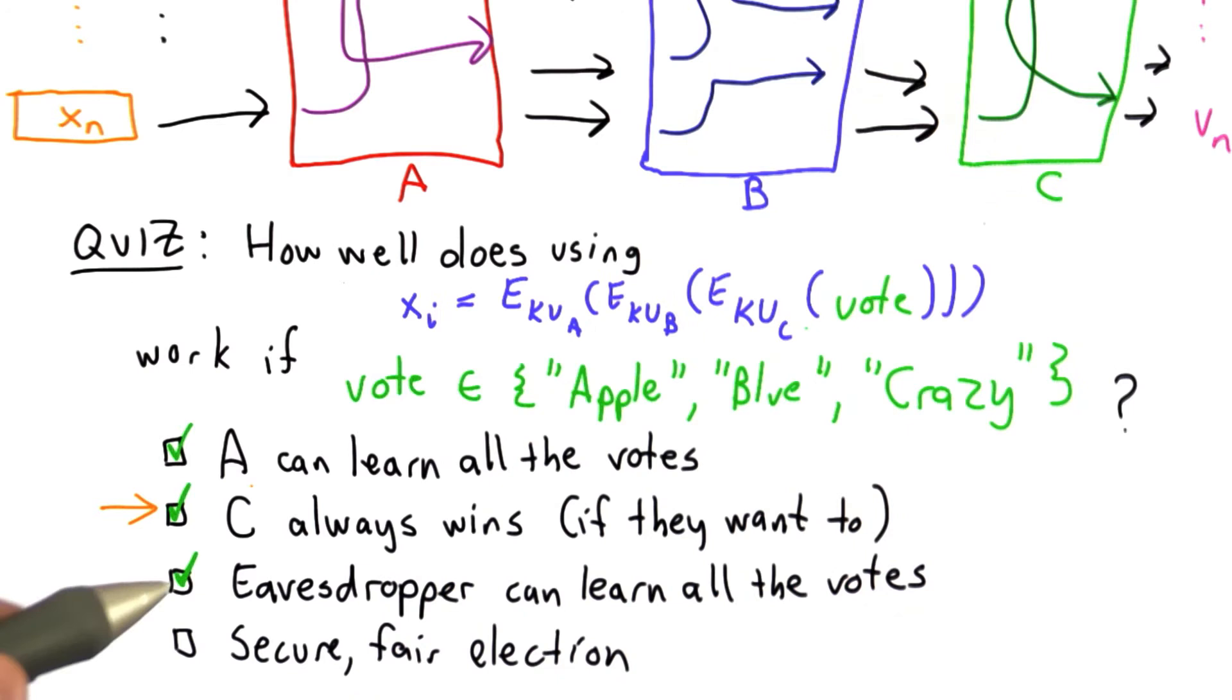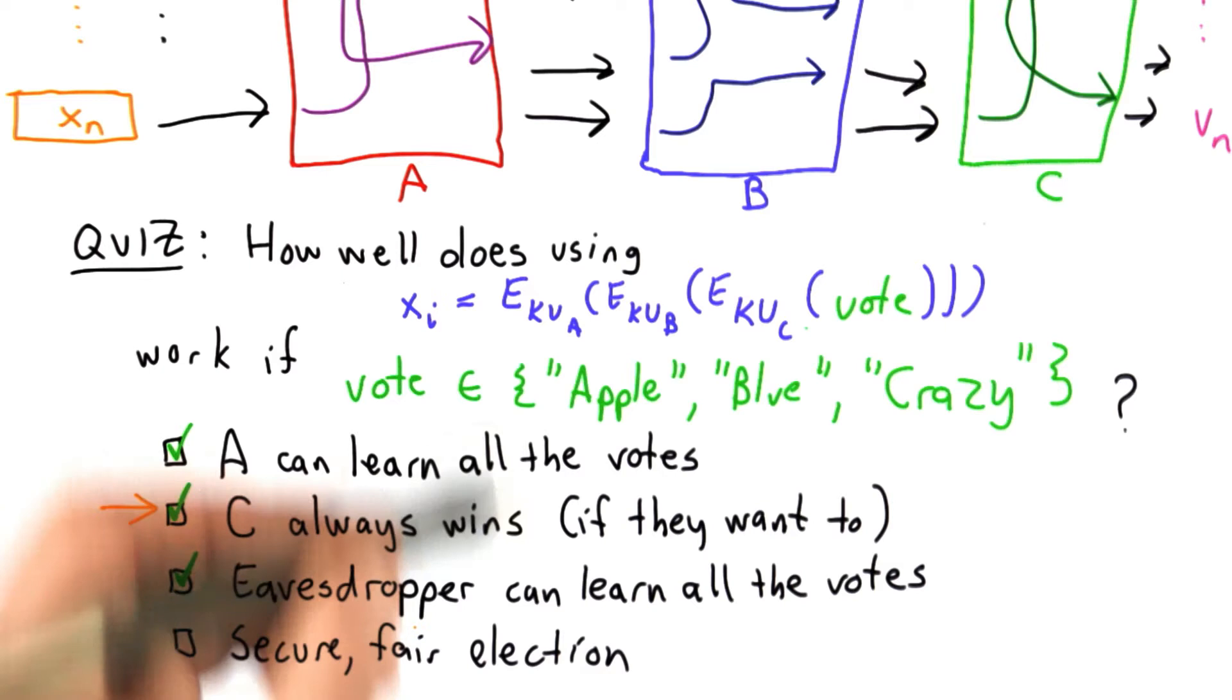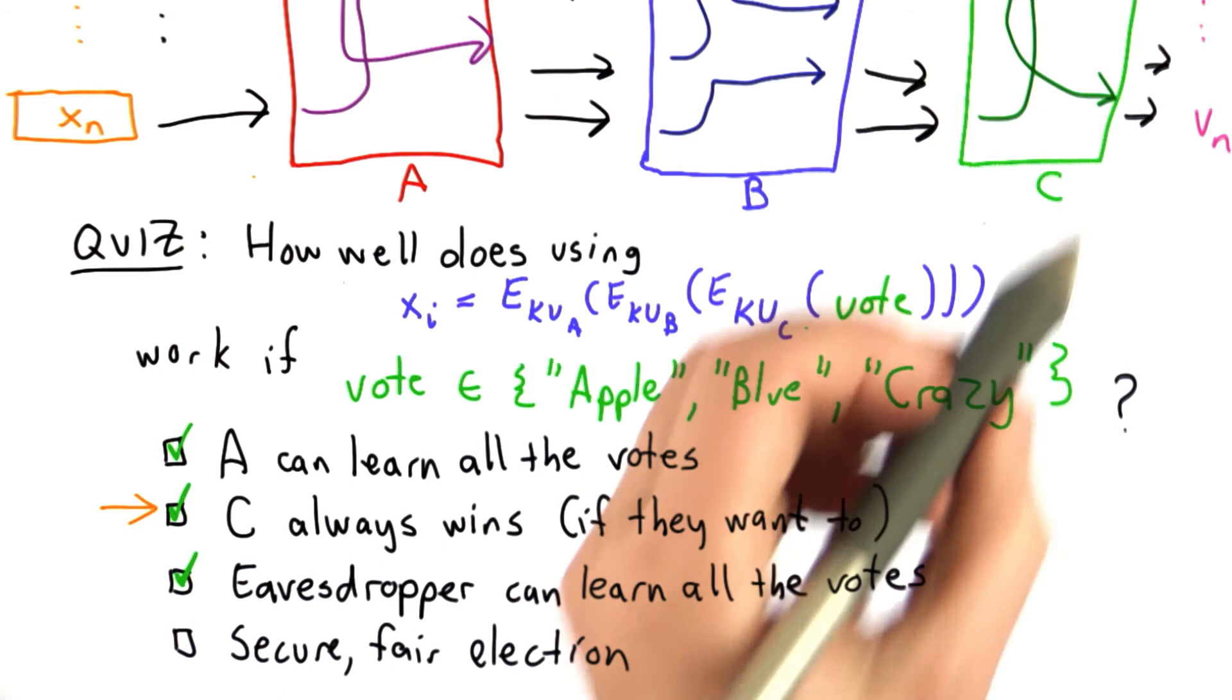But in this case, because the encryption is broken, someone looking at the votes that come in knows what the votes are already and knows if C cheats.